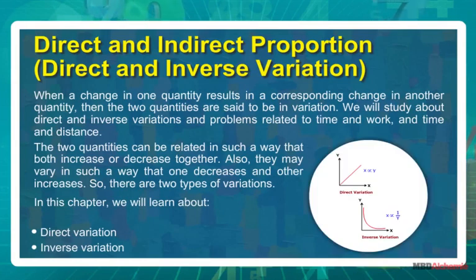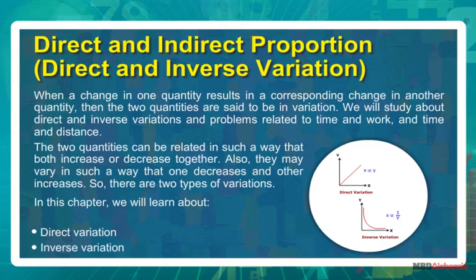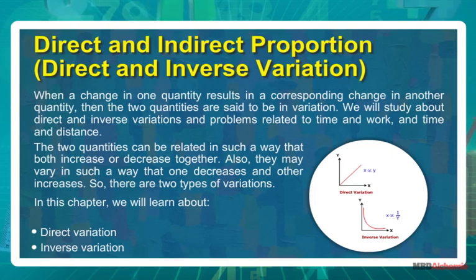When a change in one quantity results in a corresponding change in another quantity, the two quantities are said to be in variation. We will study about direct and inverse variations and problems related to time and work, and time and distance. The two quantities can be related so that both increase or decrease together, or one decreases while the other increases. There are two types of variations, and in this chapter we will learn about direct variation and inverse variation.